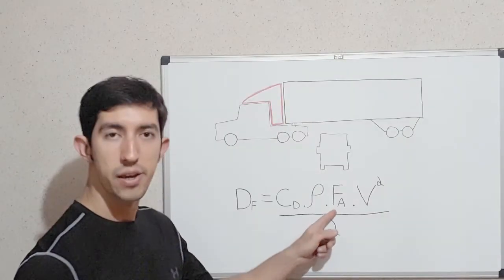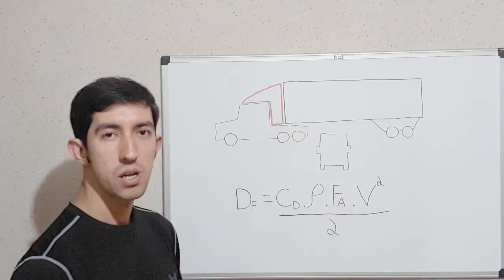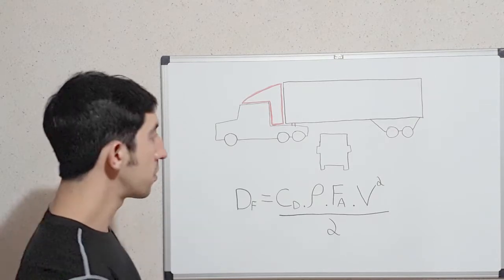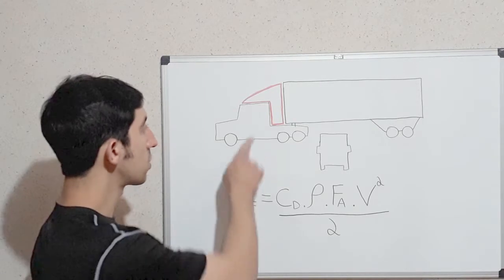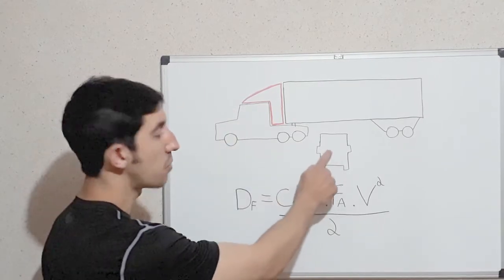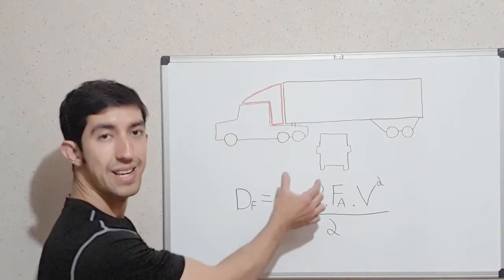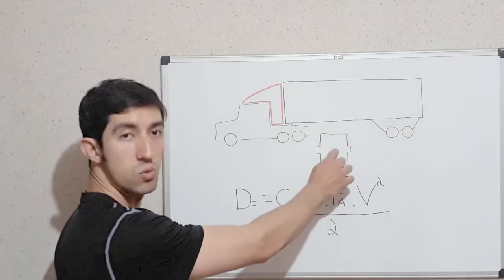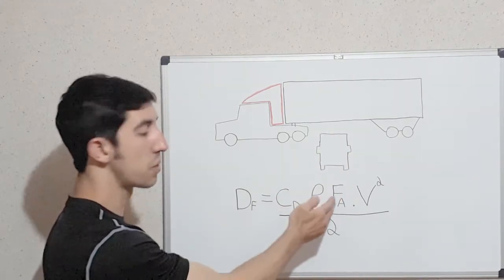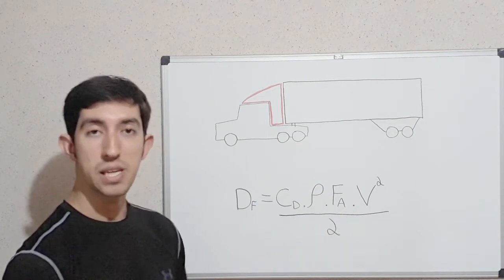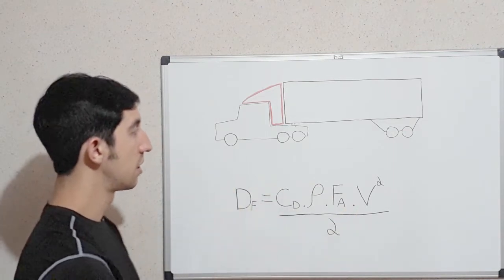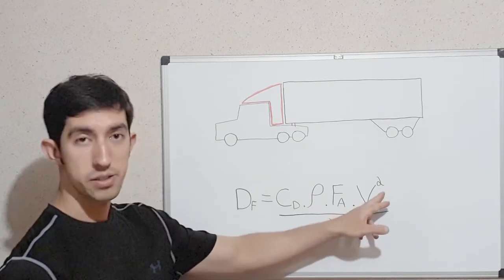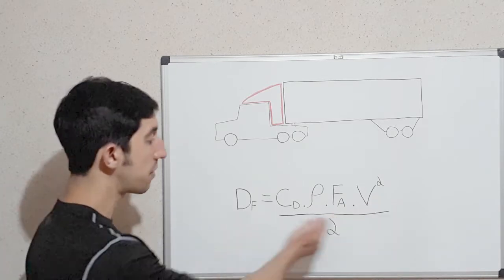This FA here is the frontal area of the truck. If you see the truck from the front, you will see the shape more or less like this. So you calculate the area that we have here to put in the formula. The letter V is the velocity of the truck is traveling. The velocity is squared. Then everything is divided by 2.